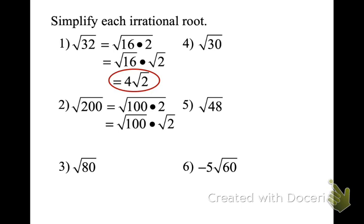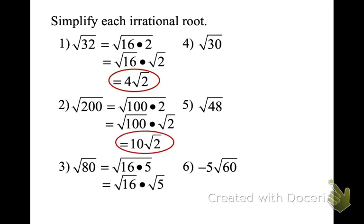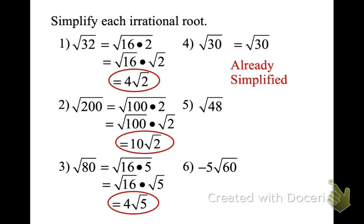√80: I'm thinking 20 times 4. And 20 is made up of 5 times 4, so I've got two 4s. Pull out a 4 and I'm left with √5 — so it's 4√5. You may have broken it down to 16 and 5 directly — same answer. √30: the factors are 6 and 5, 10 and 3, 2 and 15 — there are no perfect squares, so it's already simplified. √48: I'll say 16 and 3. The root of 16 is 4, so it's 4√3.